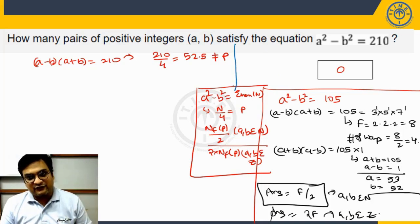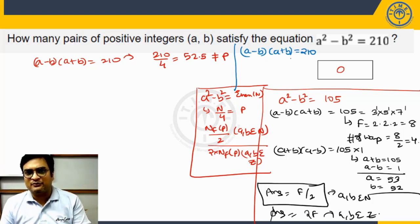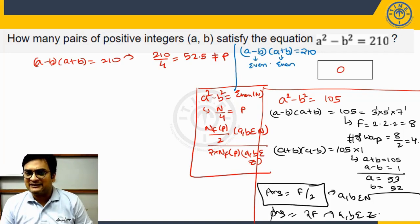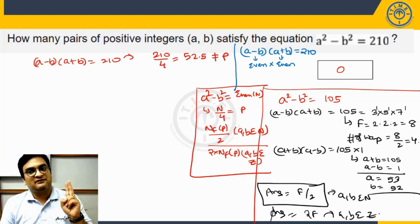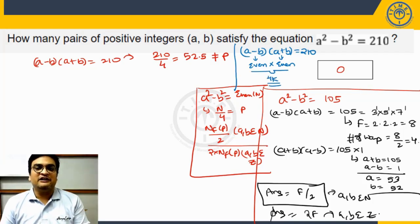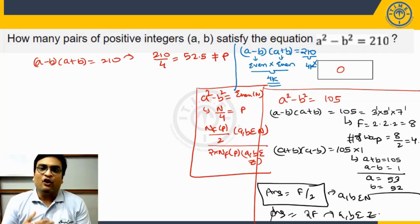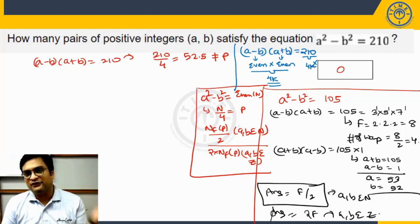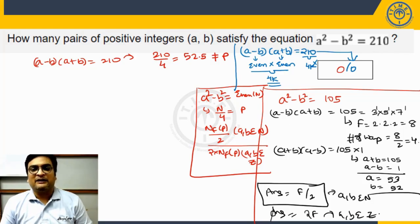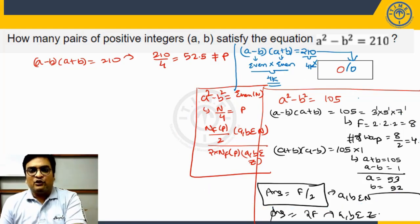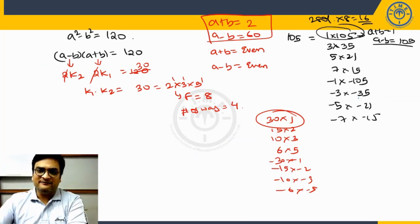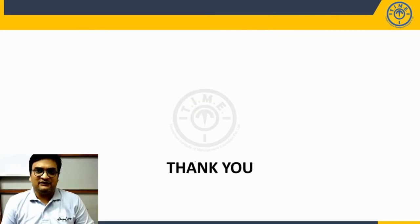Another way to see it: a² - b² = (a-b)(a+b) = 210. The product of two integers is even, so at least one must be even; but as we saw, if one is even both must be even. So the left-hand side must be a multiple of 4. But 210 is not a multiple of 4, so you can never have equality — just like saying an odd number equals an even number. The left-hand side is always a multiple of 4, the right-hand side is not, so the answer is 0. I hope you have followed this entire discussion. Thank you and all the best.